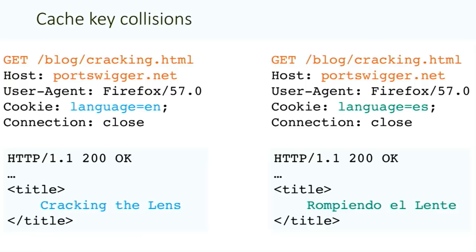What happens if there's something important that's not included in the cache key? Here we have two requests to the same website and URL to retrieve a white paper, but one is trying to fetch it in English and the other in Spanish, thanks to a language cookie. That's fine until you put a cache in front of this website. Once you do, it breaks — the cookie header is not part of the default cache key, so the cache is completely oblivious to it. The English user accidentally poisons the cache with the English version, and all users of other languages end up receiving the white paper in English. In effect, everything that's not part of the cache key is part of the cache poisoning attack surface.